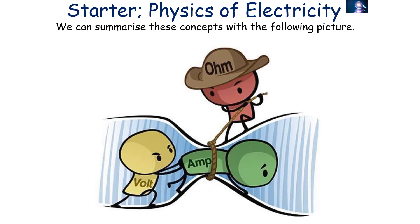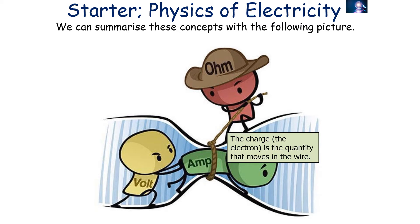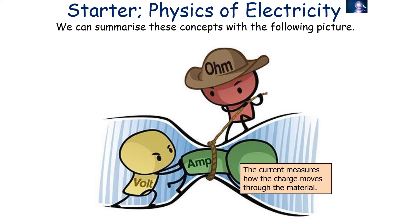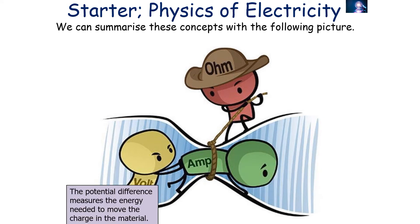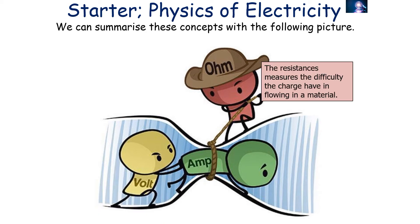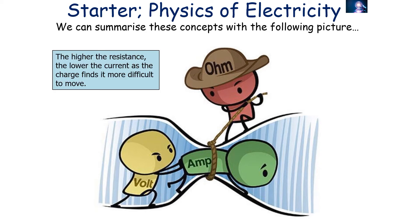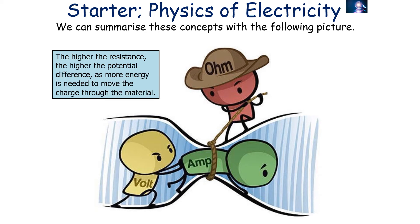We can summarise these concepts as follows. The charge — in this case the electron — is the quantity that moves in the wire. The current measures how the charge moves through the material. The potential difference measures the energy needed to move the charge in the material. And the resistance measures the difficulty the charge has flowing in a material. The higher the resistance, the lower the current, as the charge finds it more difficult to move. The higher the resistance, the higher the potential difference needed, as more energy is required to move the charge through the material.